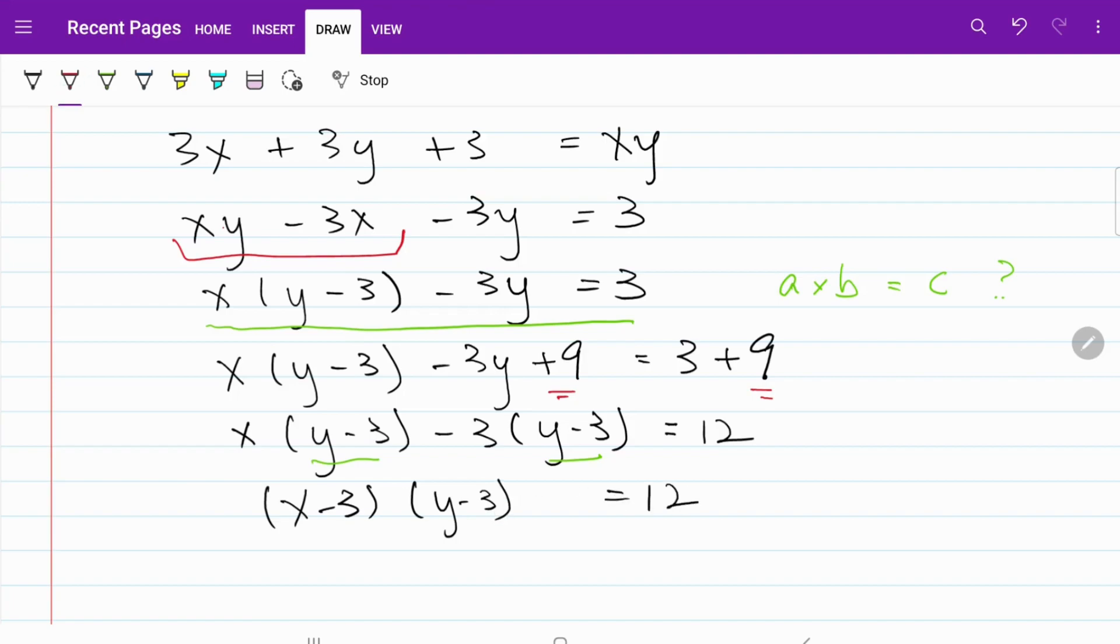From here, we need to think about how many different combinations of numbers that we can use to come up with a product of 12. I have 1 times 12 or 12 times 1. I can also have 2 times 6, 6 times 2, and the last one being 3 times 4 and 4 times 3. Let's go ahead and try each one of them out.